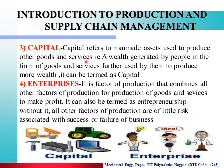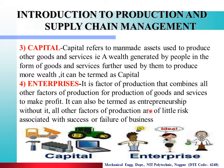The third factor is capital. Capital refers to the manmade assets used to produce other goods and services — wealth generated by people in terms of goods and services further used to produce more wealth. Machinery and all electronic goods used for converting raw material into finished goods, as well as cash assets, are called capital. The fourth factor is enterprises — it is the factor of production that combines all other factors: land, labor and capital, where raw material is converted into finished goods.